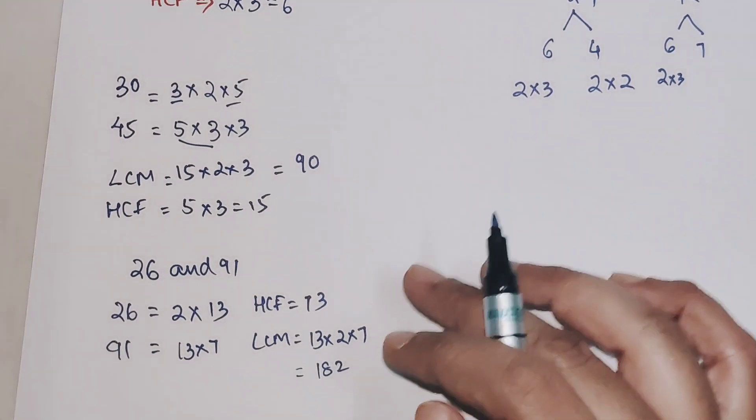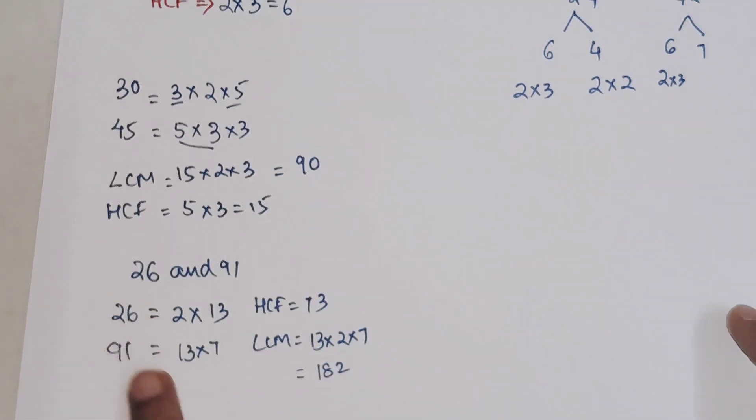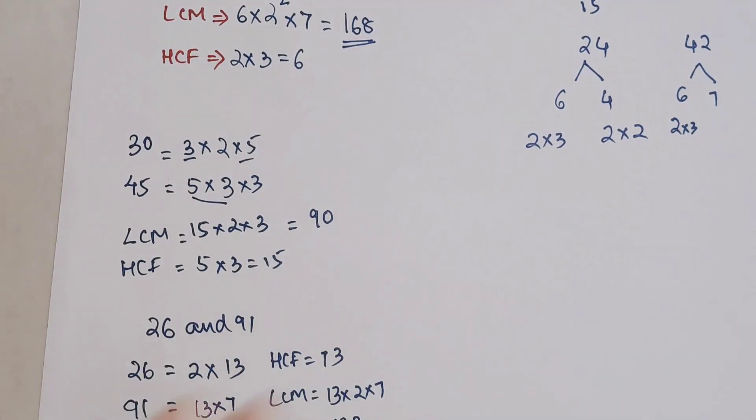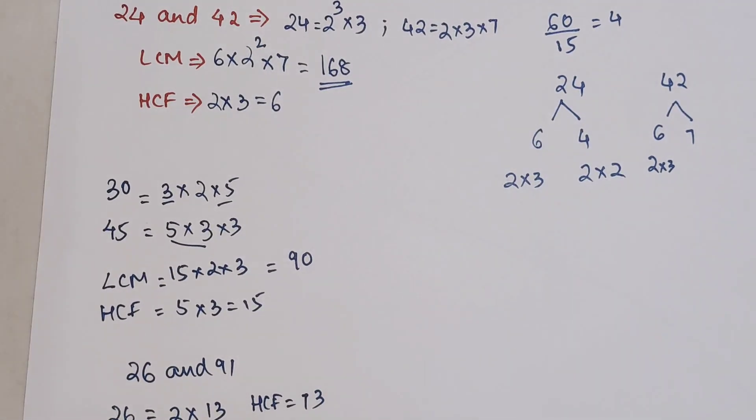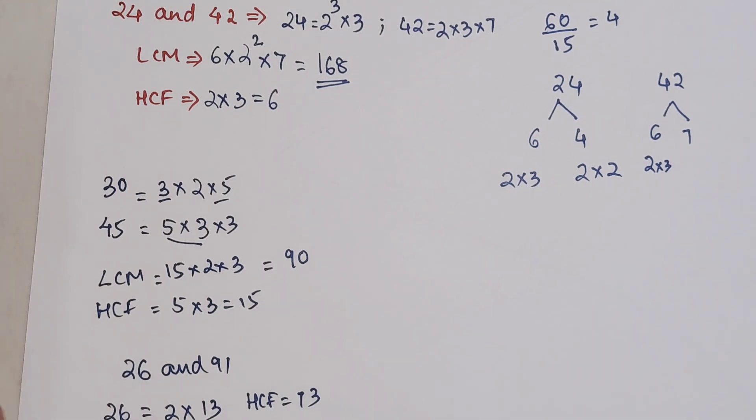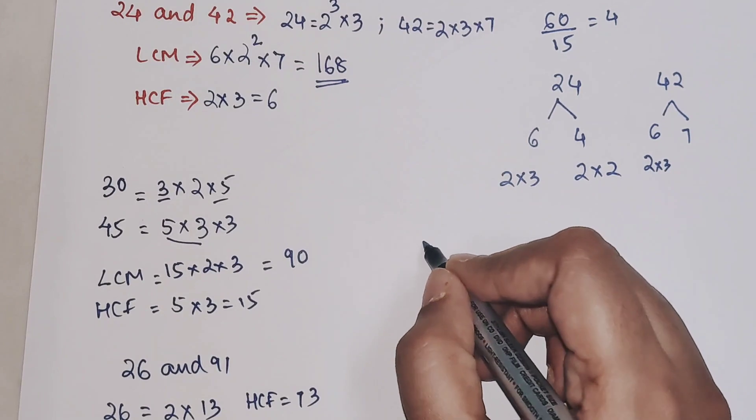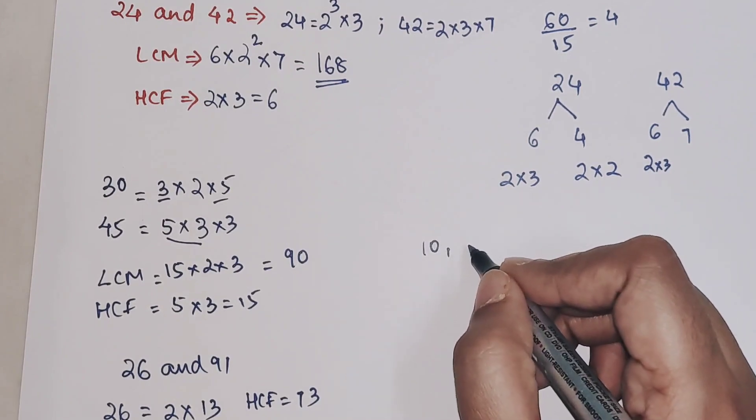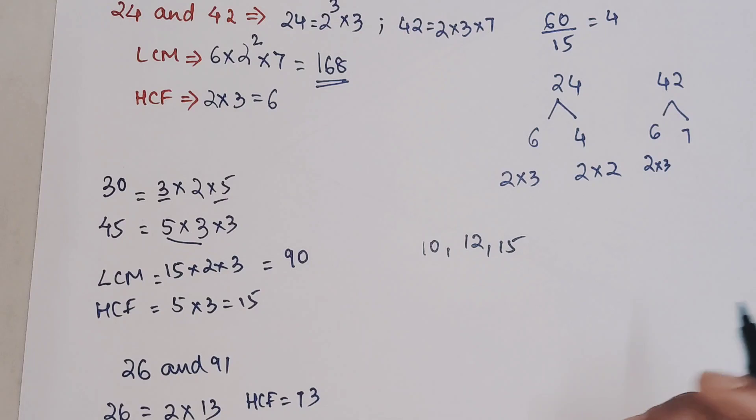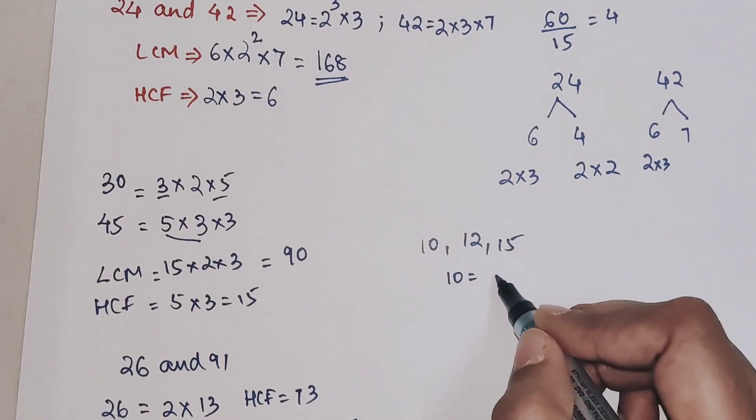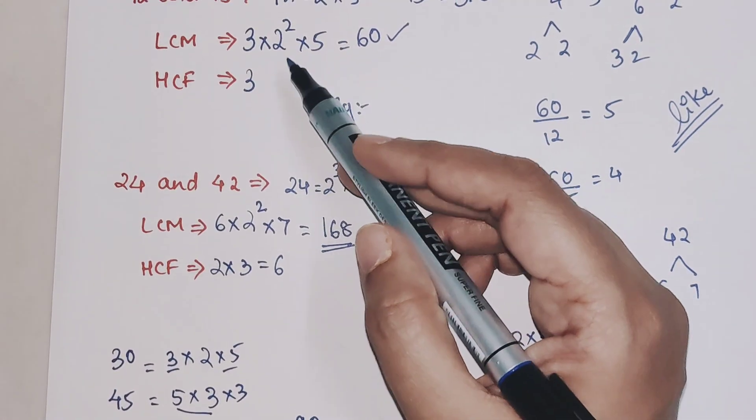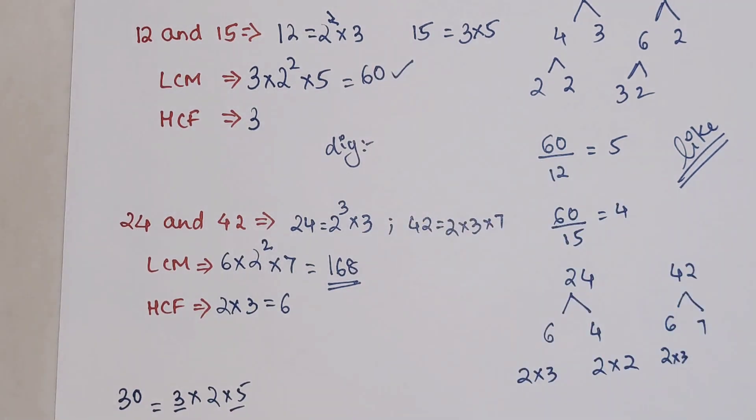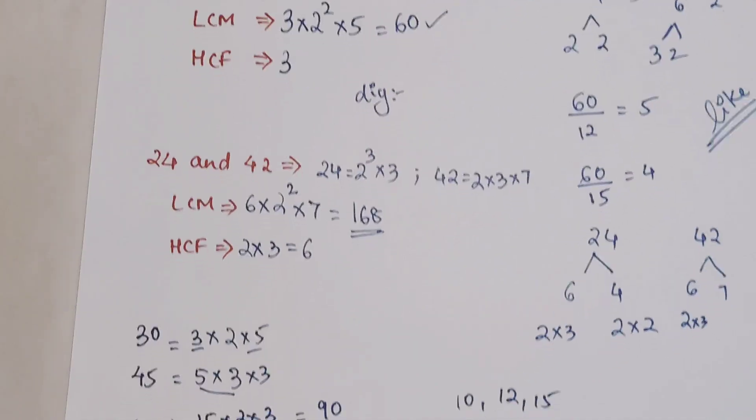Now, like I said, we are going to do more numbers, not only just 2 numbers. We normally teach you 2 numbers because that is the basic thing which is normally asked. But when you appear for entrances, the number of numbers for LCM might get increased. So now let's take 10, 12 and 15. For 10 we will write 2 into 5, 12 we had taken was 2² into 3, and 15 is 3 into 5.